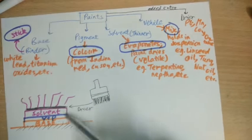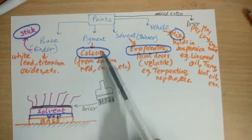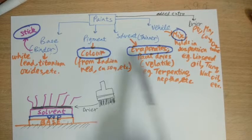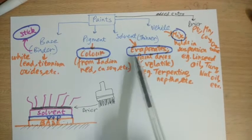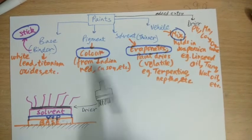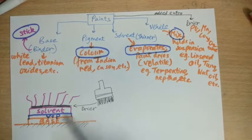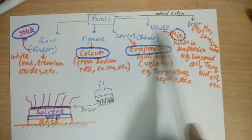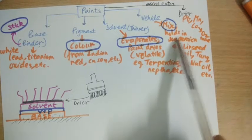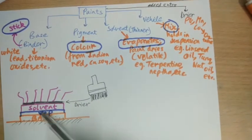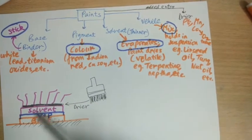Next we have vehicle. Vehicle actually combines all these three components. We have something that interlinks between them. As the name suggests, vehicle means move. So it mixes and holds the suspension. It holds the whole suspension and mixes it throughout.